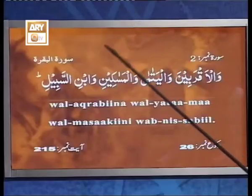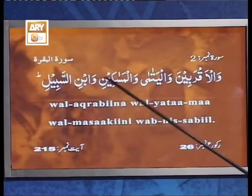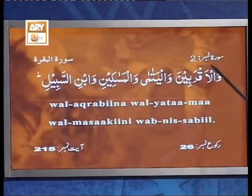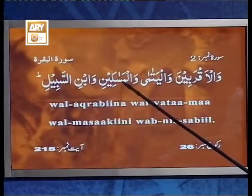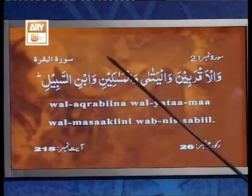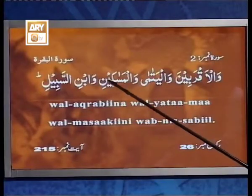حروف شمسیہ وہ حروف ہوتے ہیں جن پر الف لام موجود تو ہو لیکن لام کو پڑھا نہ جائے۔ اس کی وجہ یہ ہے کہ اگر لام پڑھیں تو بڑا عجیب لگتا ہے — مثلاً 'السبیلی' میں زبان ساتھ نہیں دیتی۔ جبکہ حروف قمریہ وہ حروف ہیں جن پر لام موجود ہو اور لام کو پڑھا بھی جائے — جیسے حمزہ، یا، میم۔